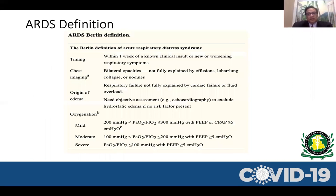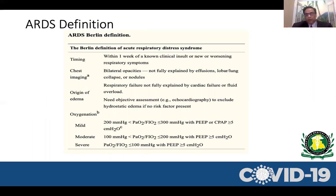The ARDS definition initially came in 1994 with the American Thoracic Society and the European Respiratory Society, and later it was modified a few years ago. They came up with the new Berlin definition, which is a little bit better, because they decided to classify ARDS into mild, moderate, and severe degrees. This is important because the mortality is very different in those populations.